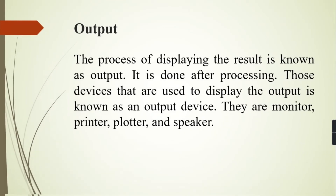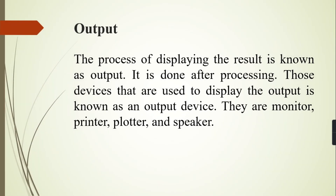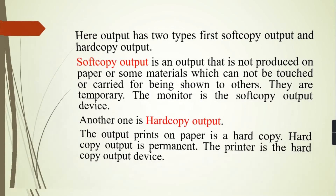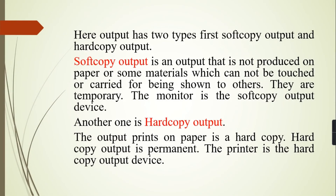Now the next topic is output. The process of displaying the result is known as output, and it is done after processing. Devices used to display the output are known as output devices — they are monitor, printer, plotter, and speaker. Output has two types: soft copy output and hard copy output.